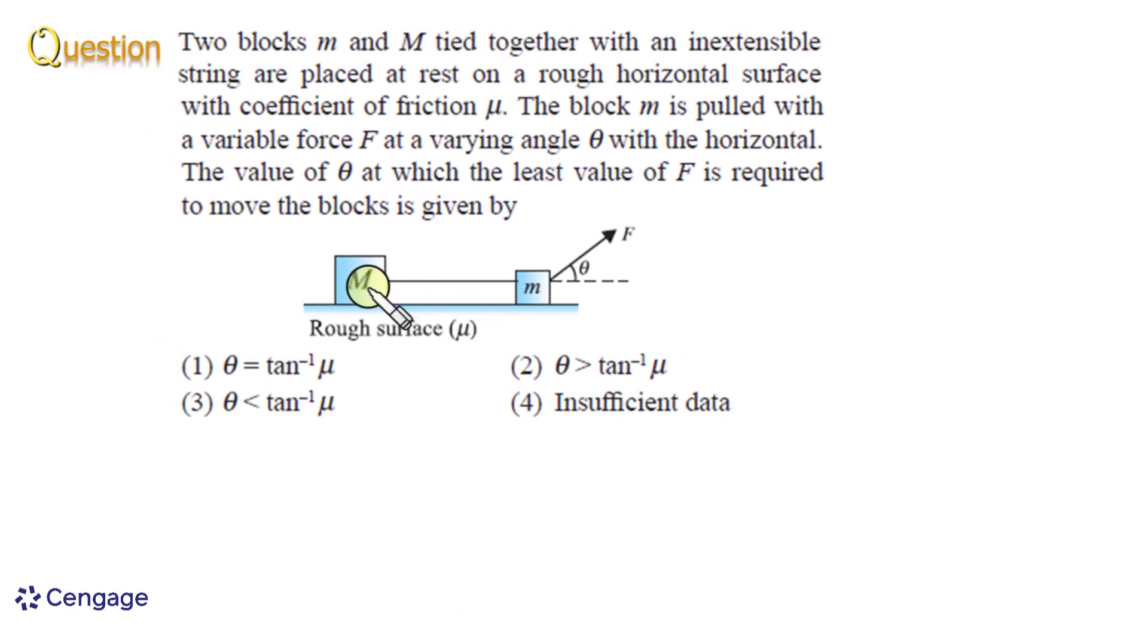In this question, it is given these two blocks capital M and small m connected together with a light inextensible string placed on rough horizontal surface with coefficient of friction μ. The small m block is acted upon by a force capital F at angle θ with the horizontal. Both capital F and θ are variable, and we need to find the value of θ for which the least value of capital F is required to move the blocks.